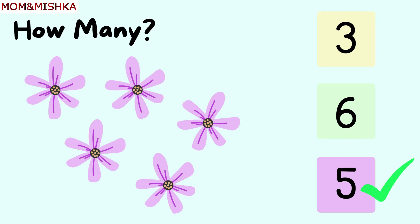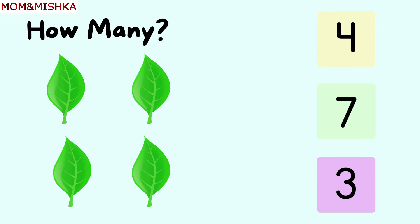There are five flowers. Let's move to the next one. How many leaves? One, two, three, four. There are four leaves.